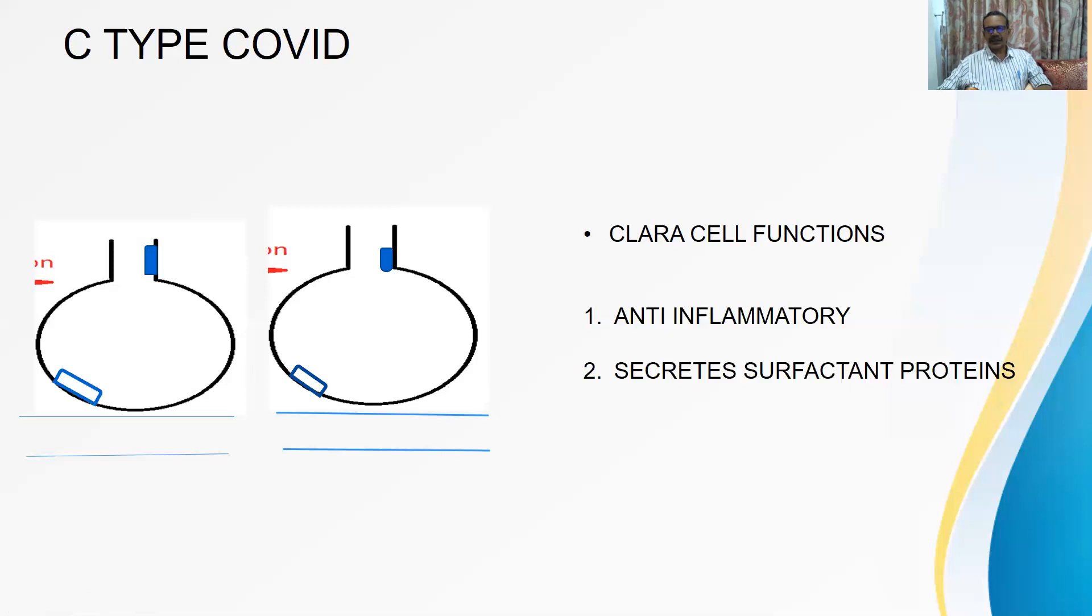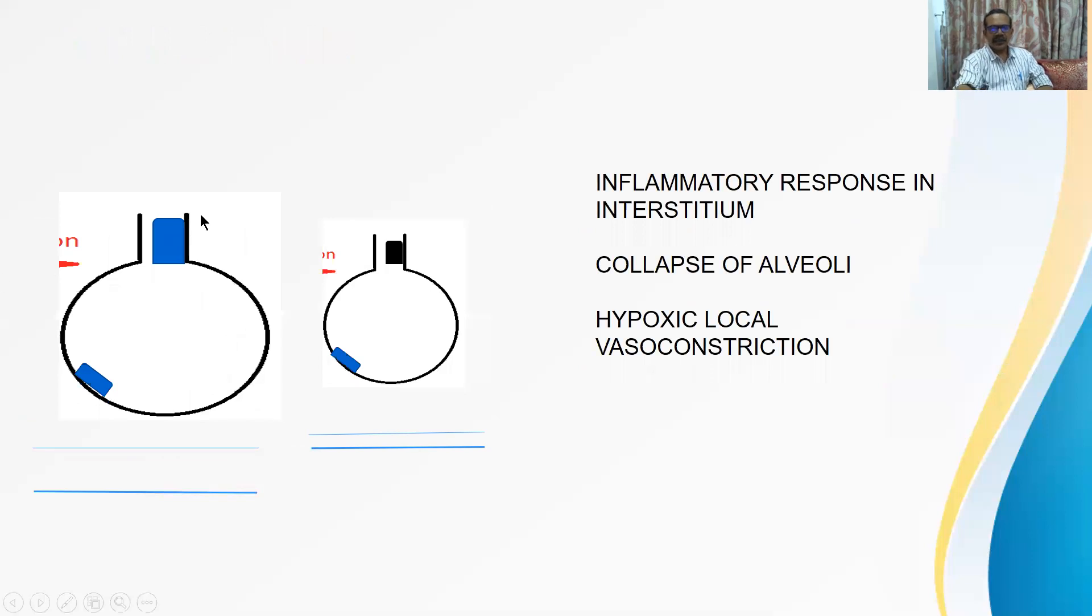So it liberates surfactant proteins, they interact with surfactant and the alveolus remains open. Surface tension reducing property of surfactant is well known. So what happens when something goes wrong?